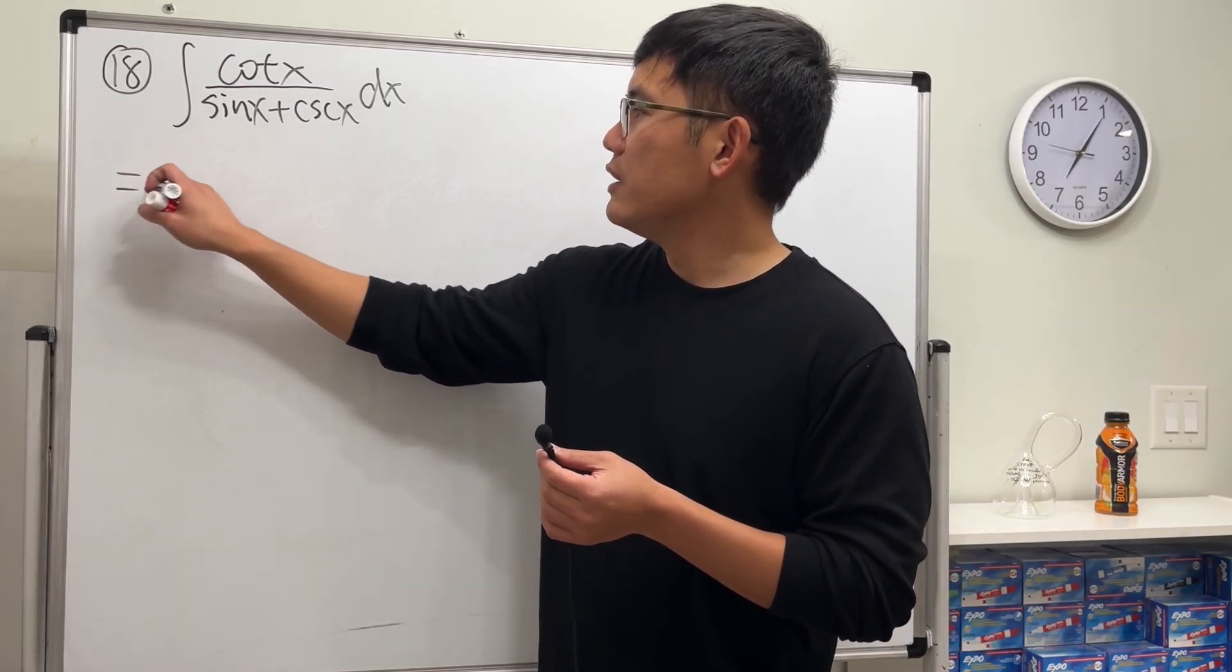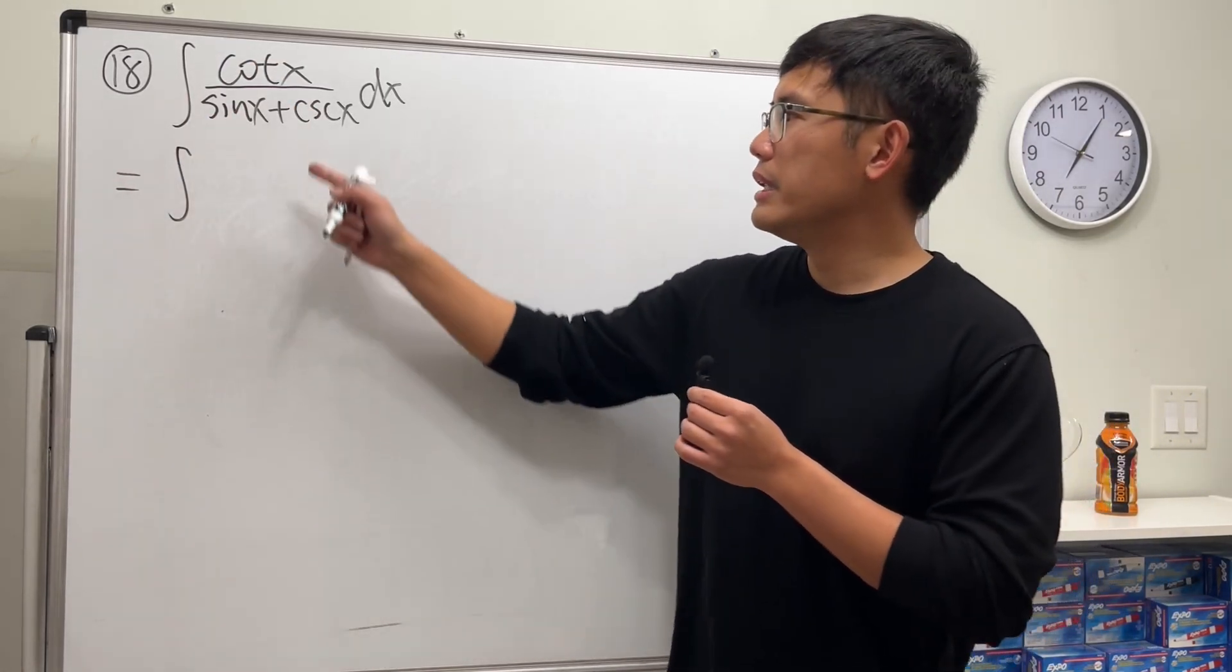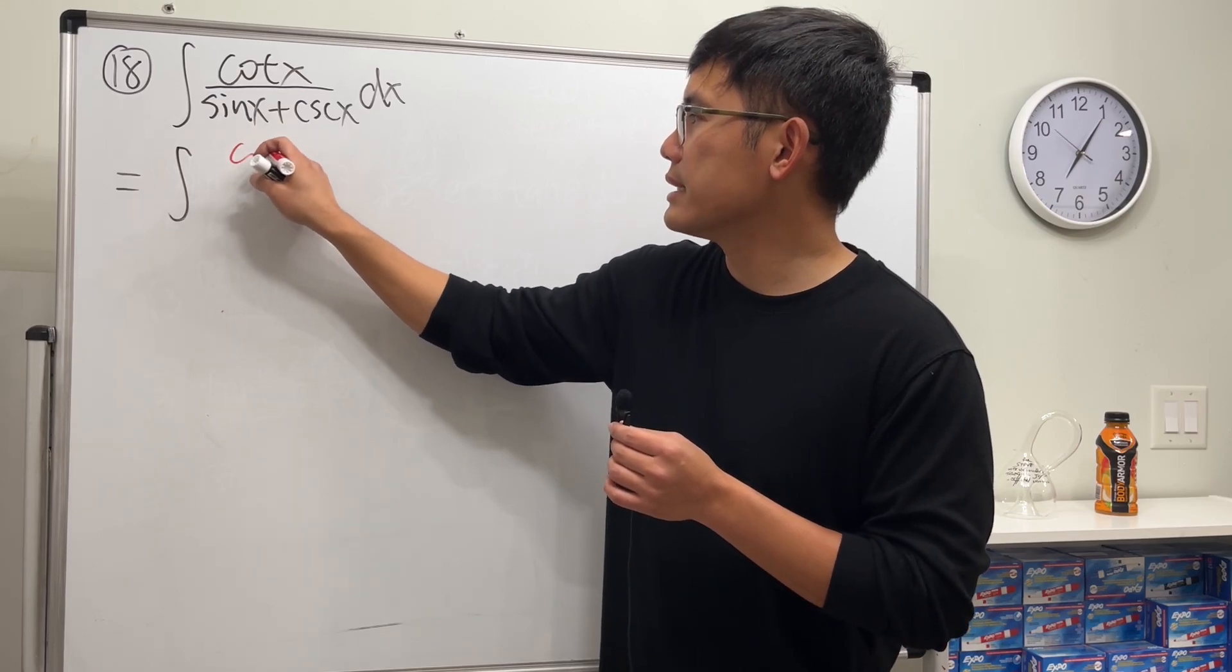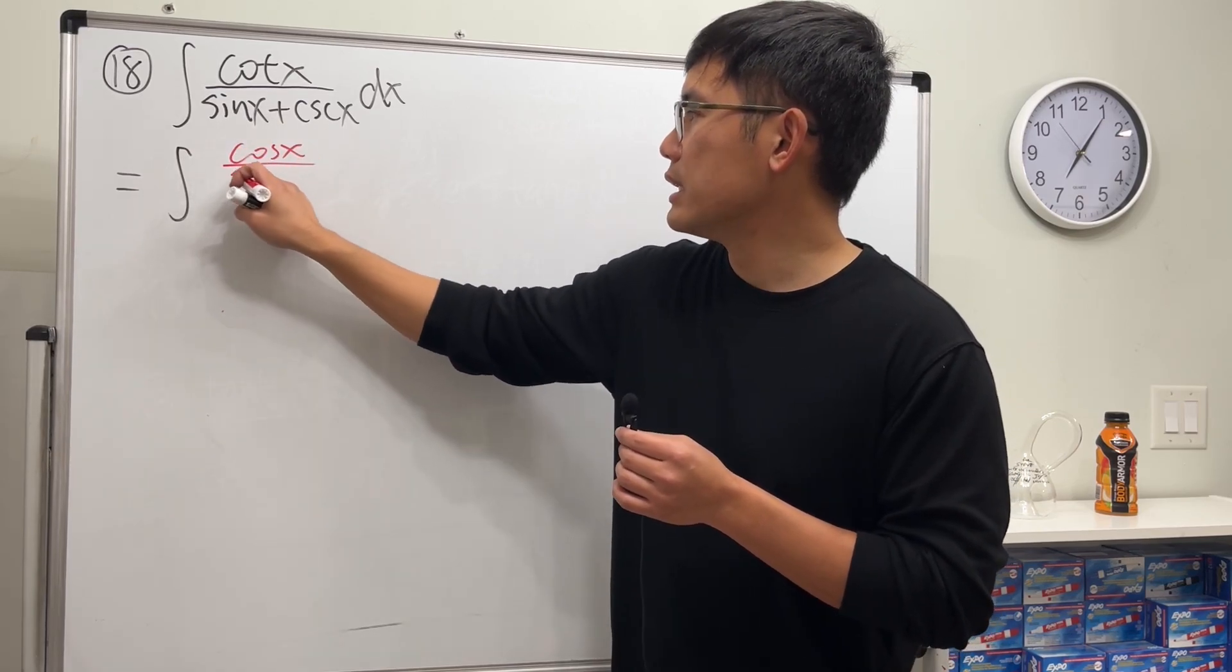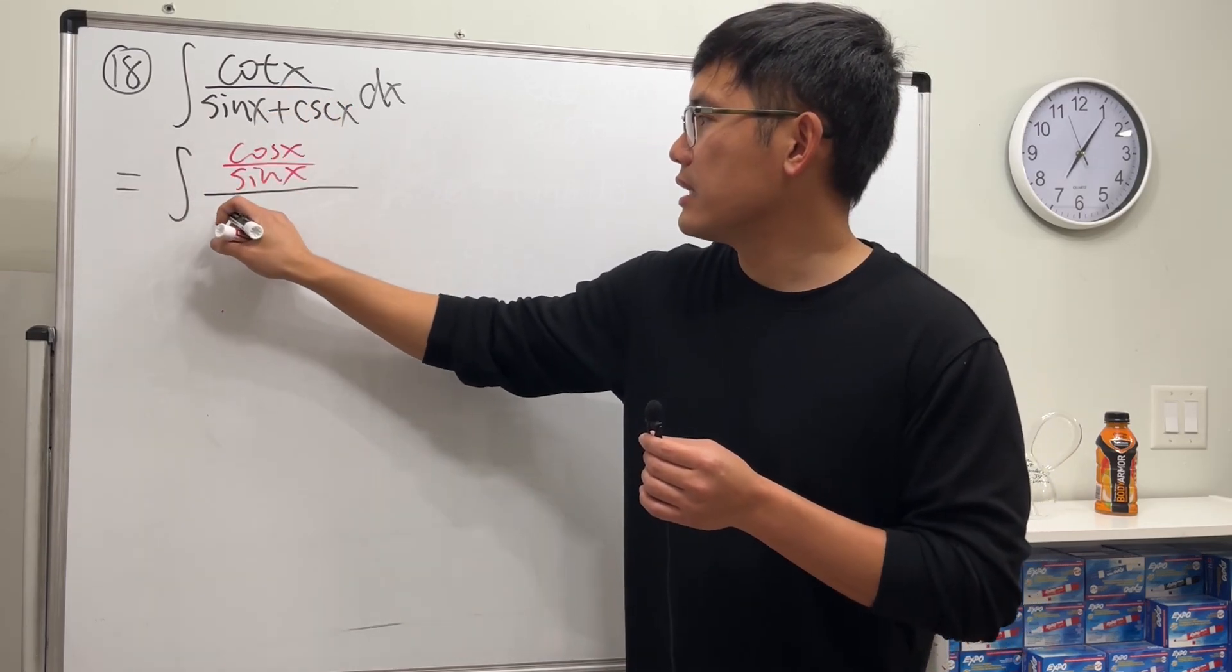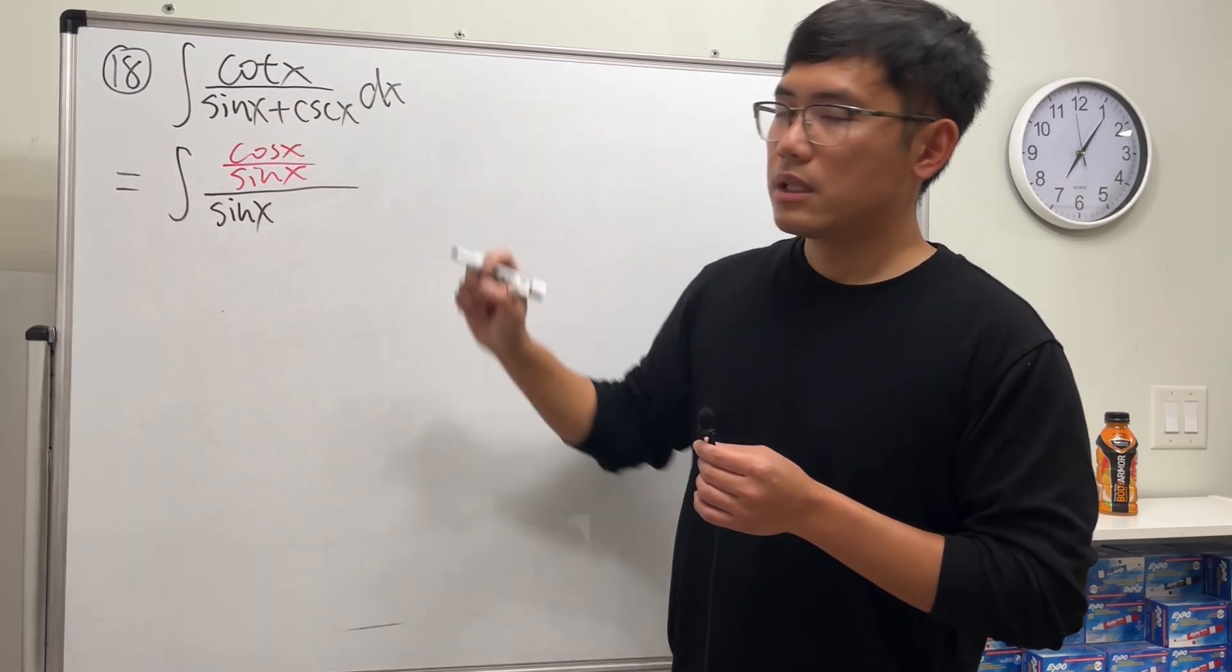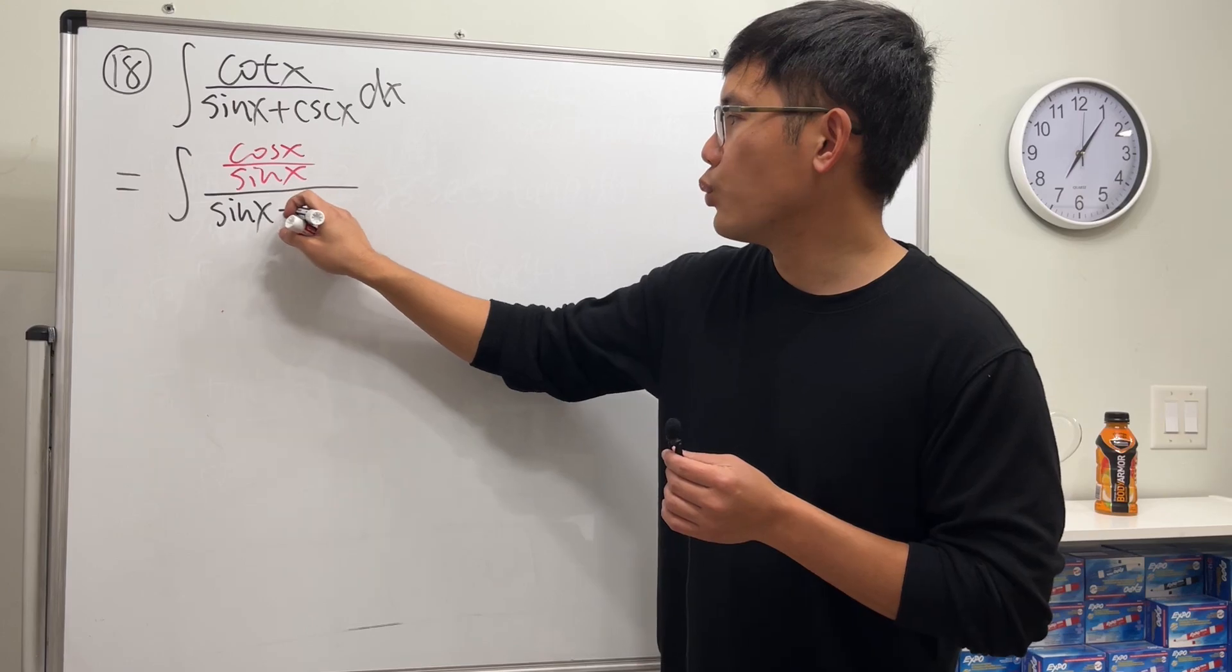Let's try it. If that's the approach, then cotangent x we'll look at as cosine x over sine x. This sine x stays. Cosecant x we'll write it as 1 over sine x.